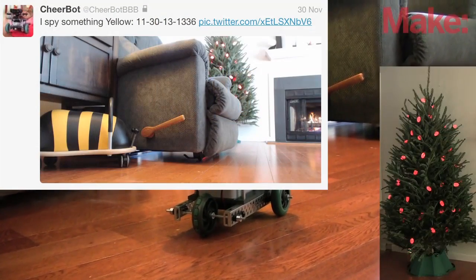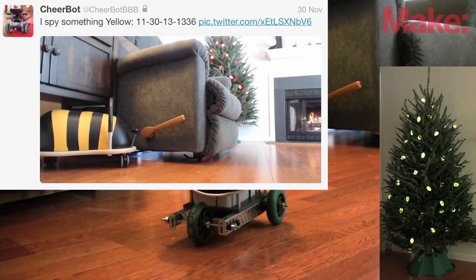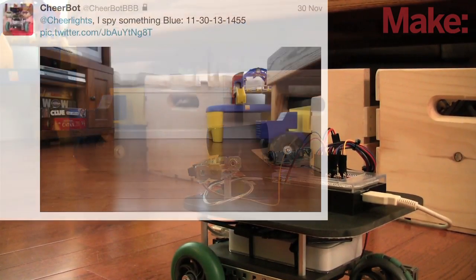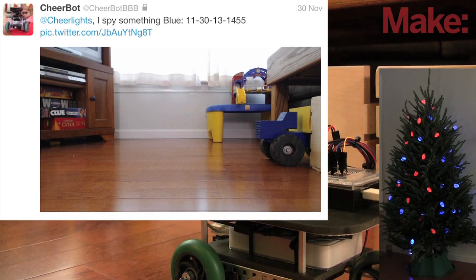Every found color is immediately reflected by the lights on the tree in my living room. Once an hour, the robot directs the color at CheerLights, which updates the current CheerLights color and changes tree light colors around the world.